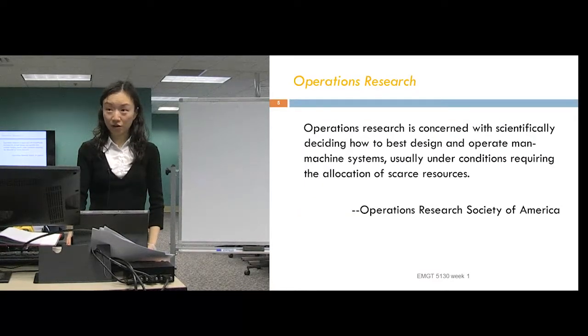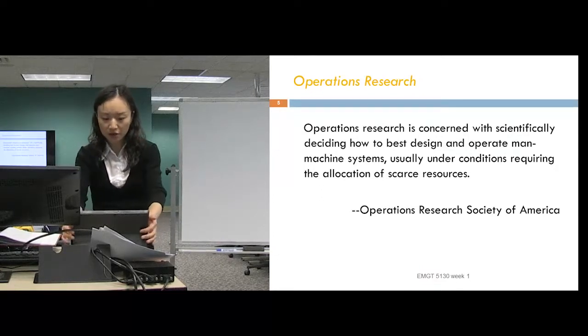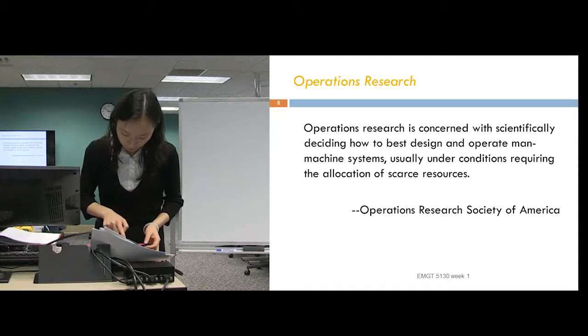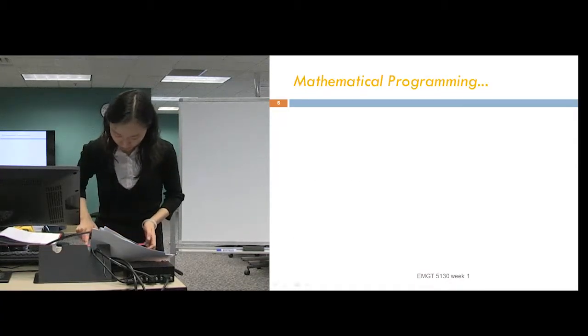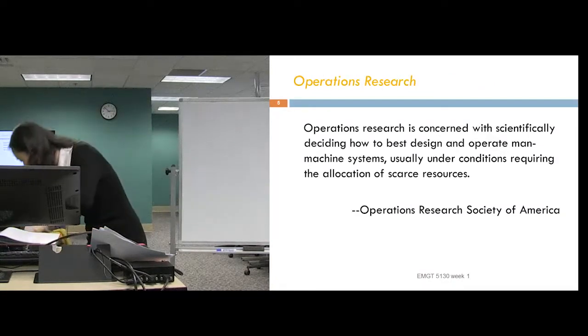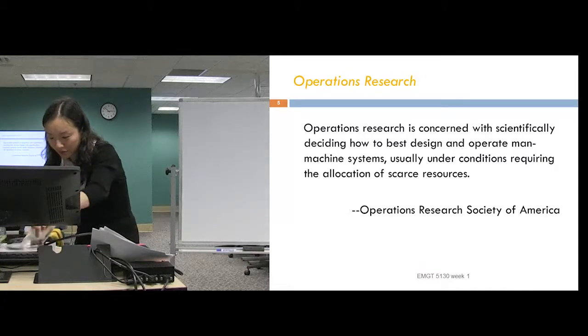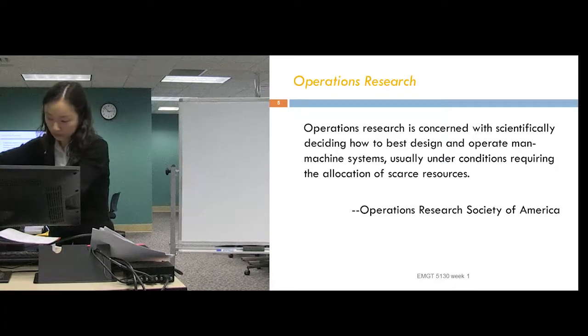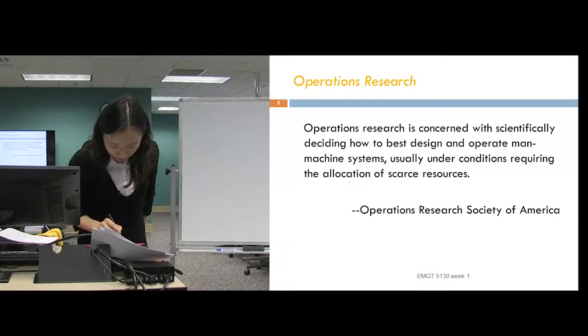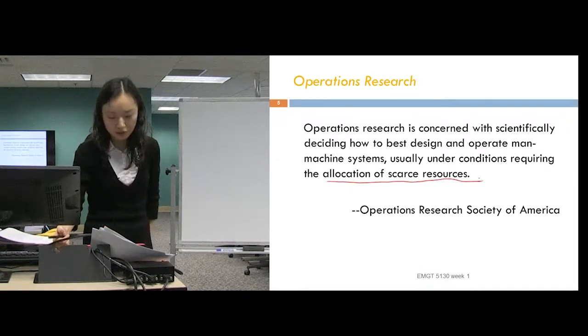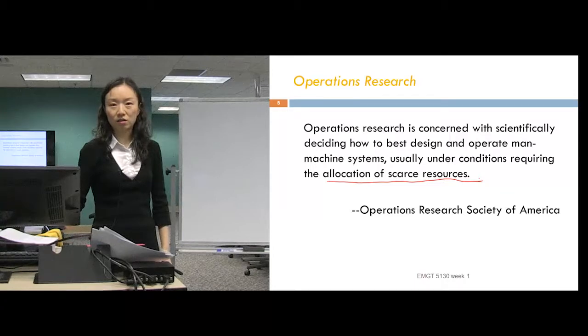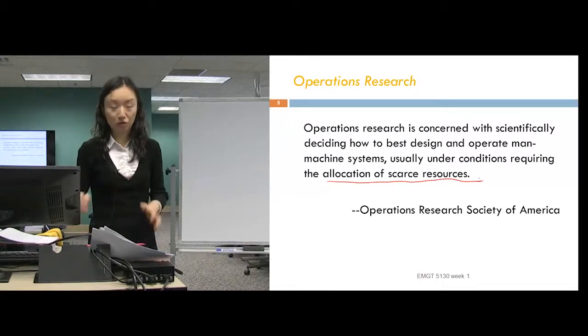According to Operations Research Society of America, the definition of operations research is concerned with scientifically deciding how to best design and operate machine systems. Usually under conditions requiring the allocation of scarce resources. For this definition, I would highlight this. As we mentioned at the very beginning, this entire subject exists because we have to allocate those scarce resources. Our decision is optimized within those capacity, within those constraints.